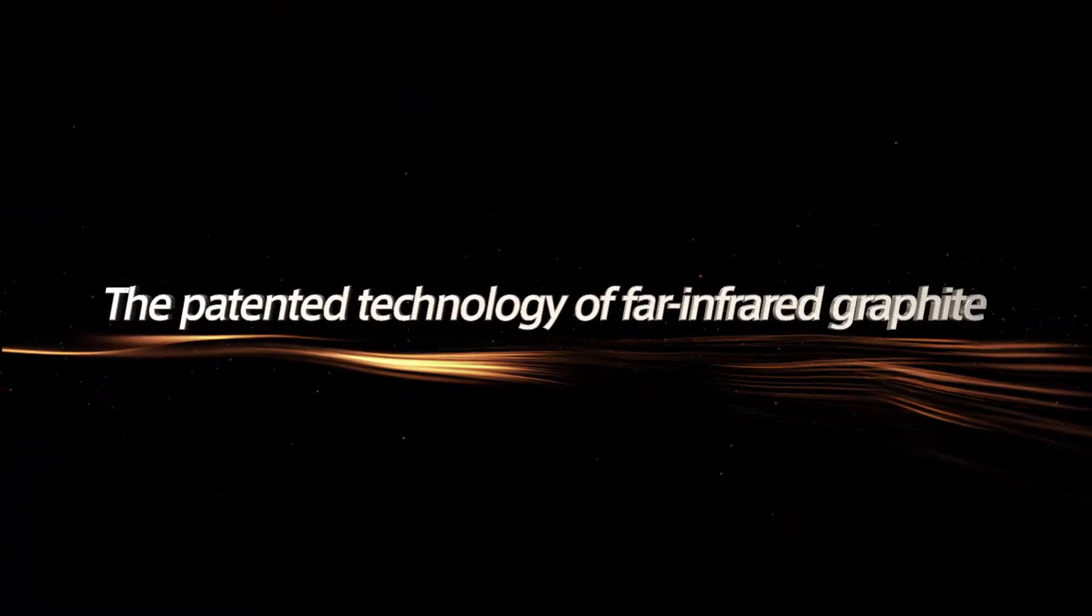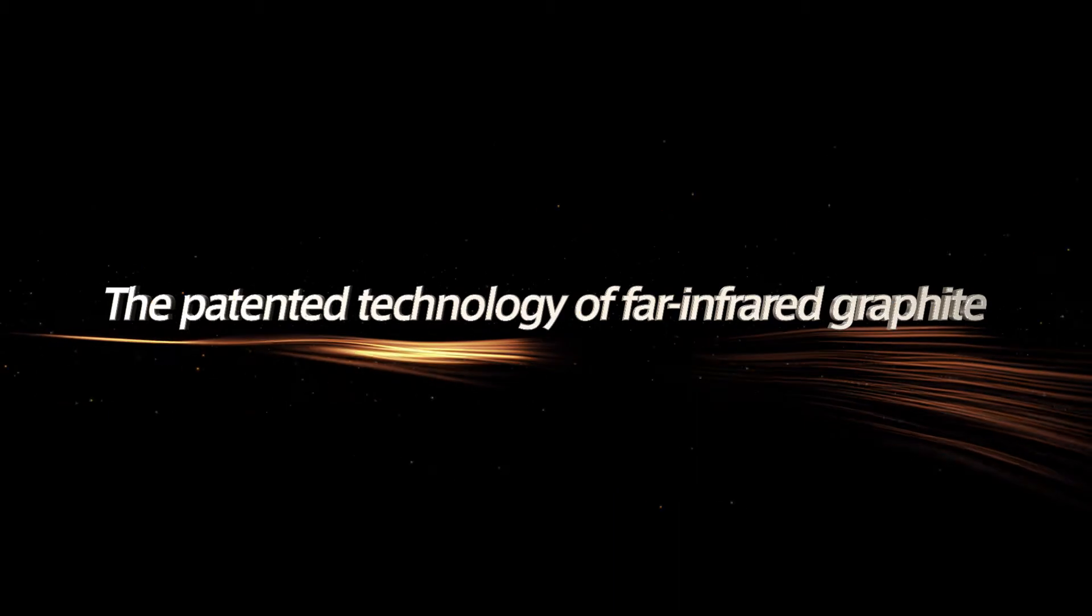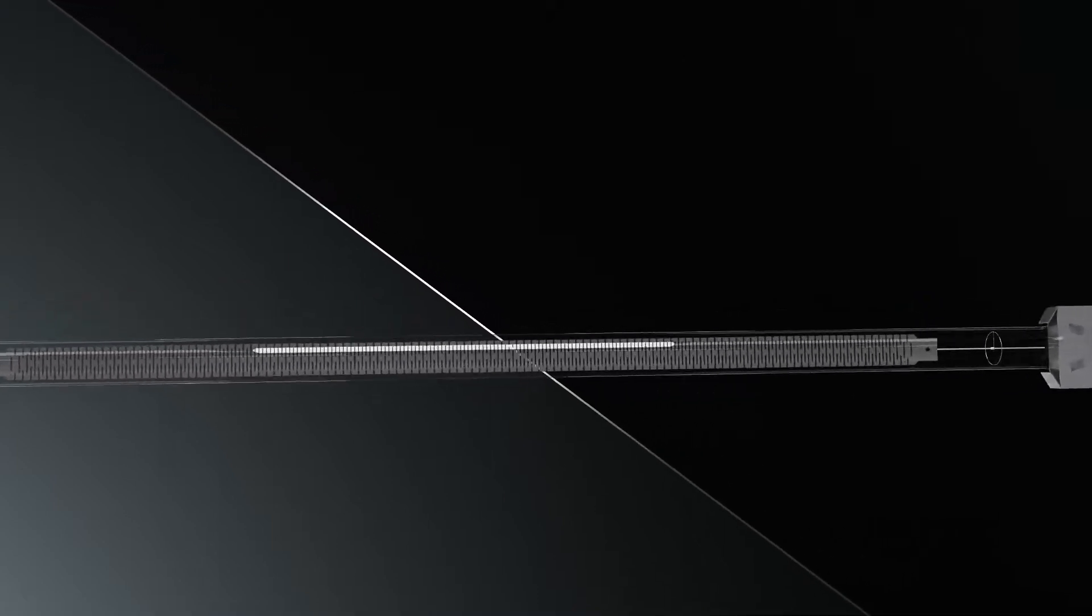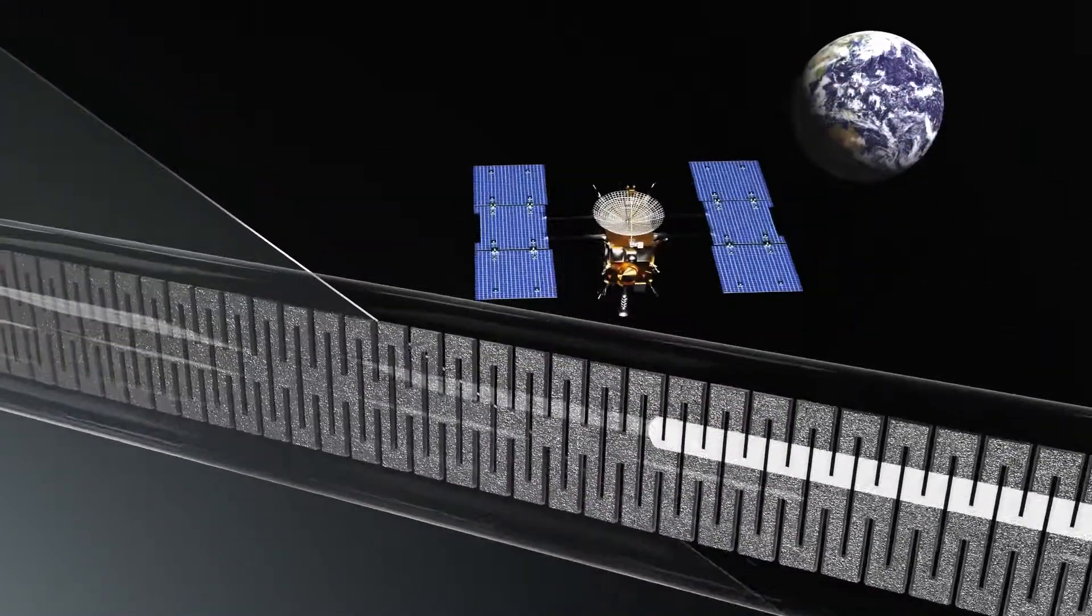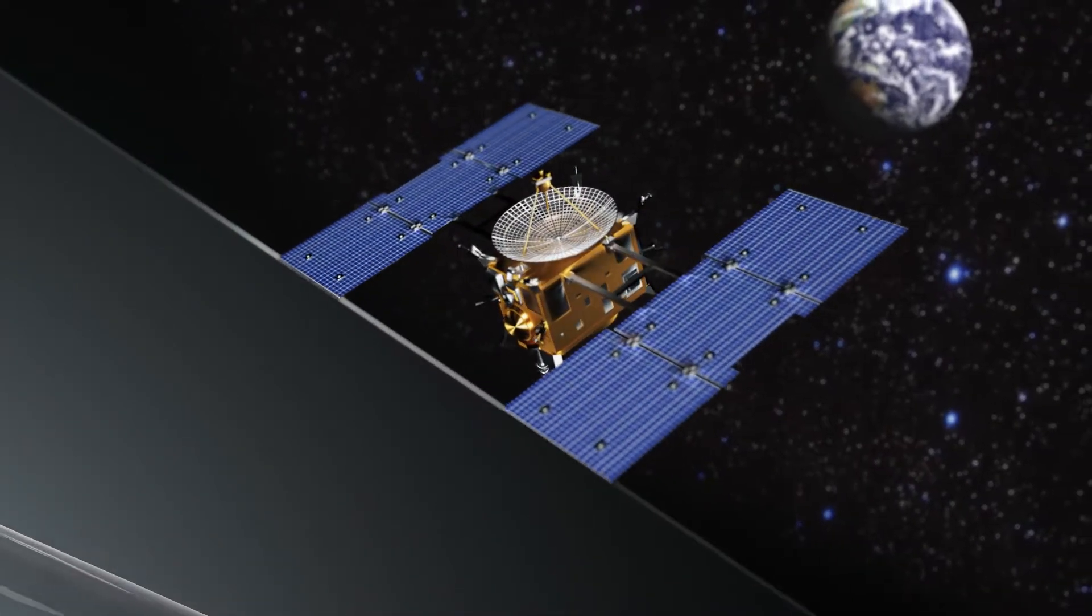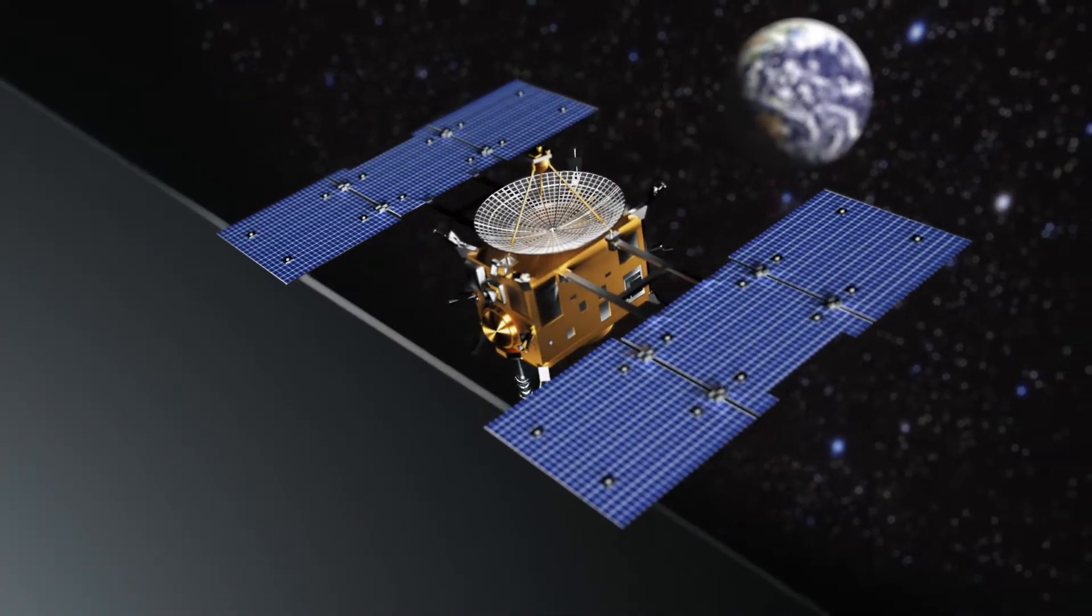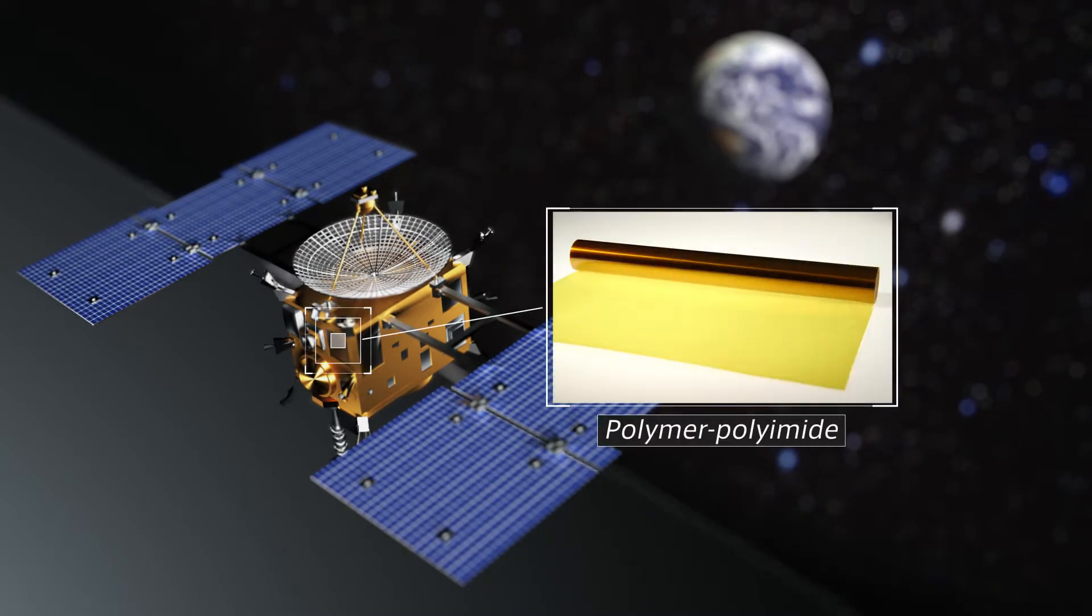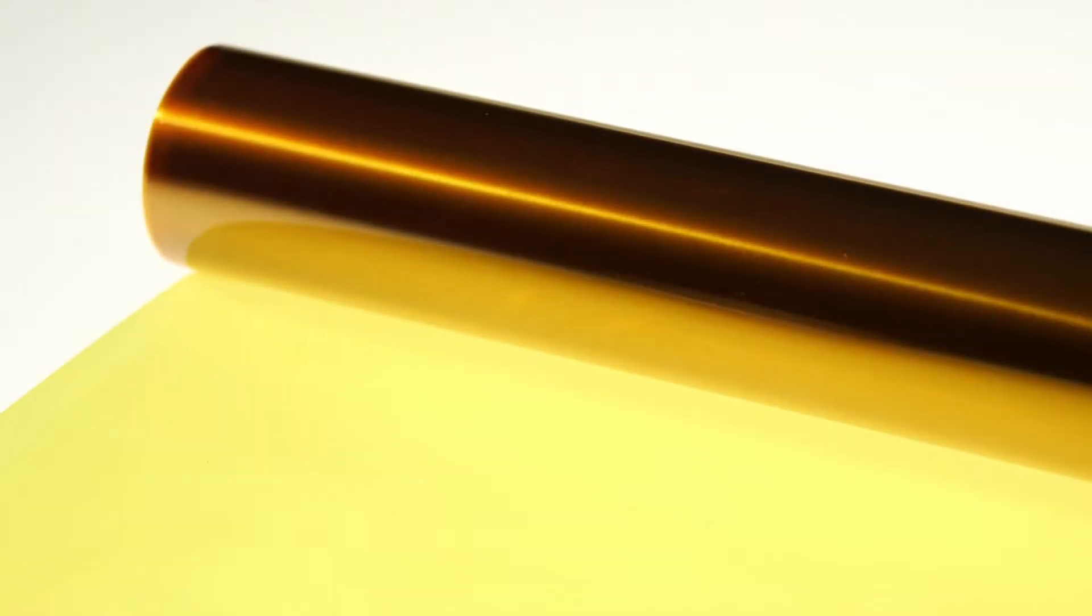The patented technology of far-infrared graphite is made from the same gold film that covers the asteroid explorer Hayabusa. It can be used in the severe environment of space. This polymer polyamide film is a special material with excellent heat resistance.